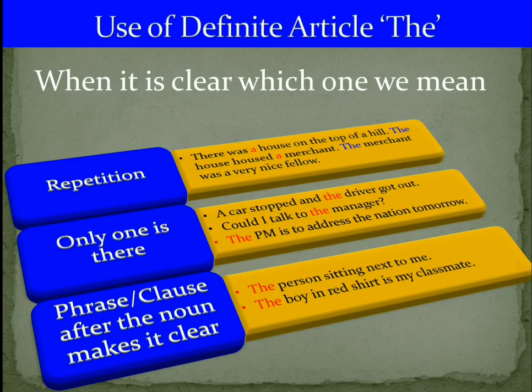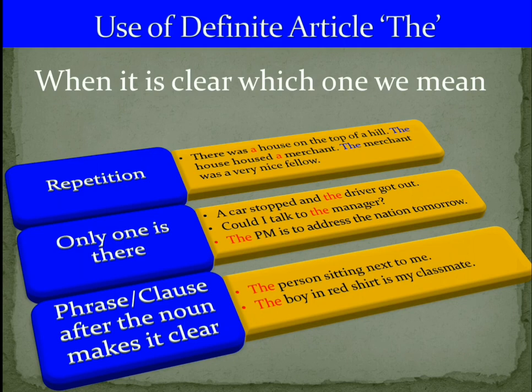One use of 'the' is when it is clear which one we mean. For example, when the car stops and the driver gets out — the driver is only one person associated with that car, so the object is particular and we use 'the'. Similarly, if I go to a restaurant and say 'Could I talk to the manager?' — there is one manager and everyone knows which manager, so we use 'the'.